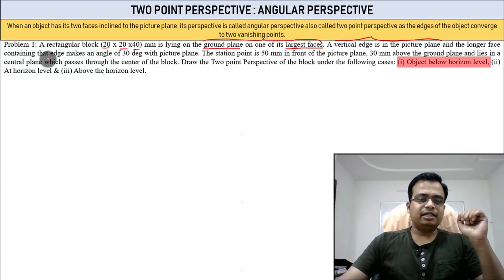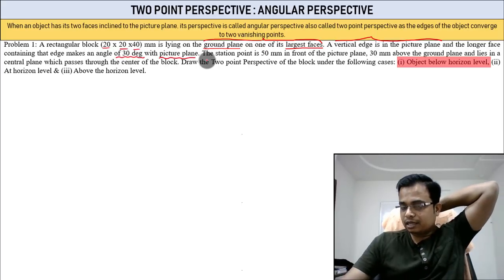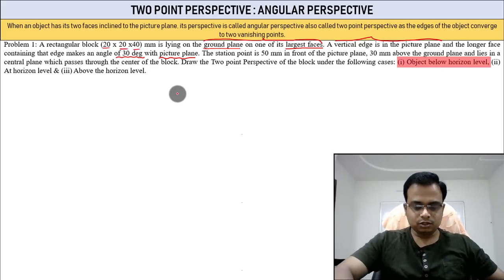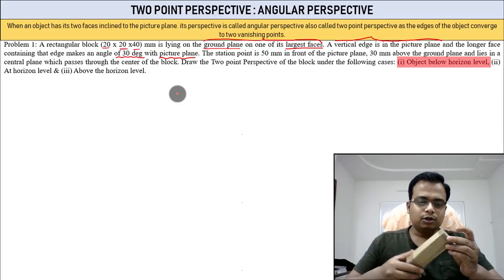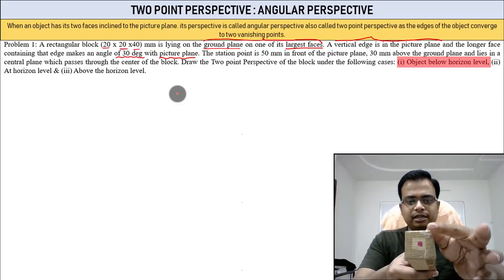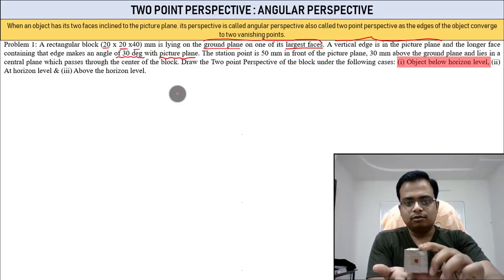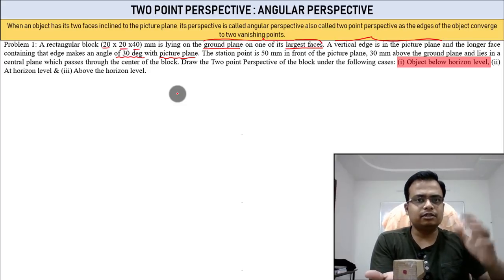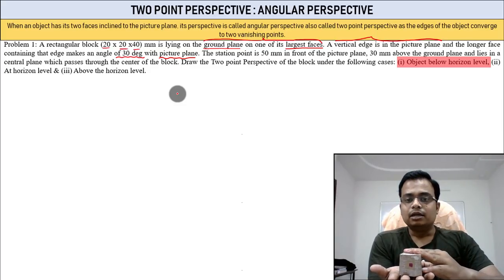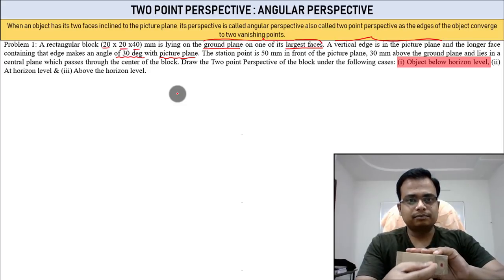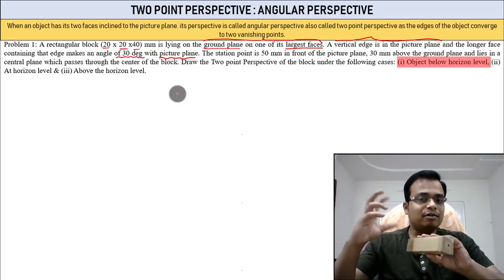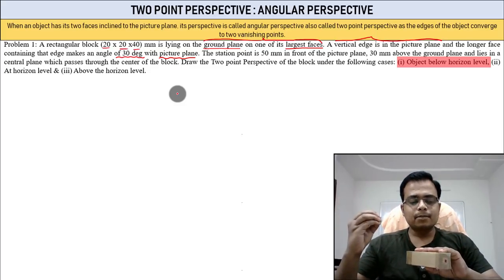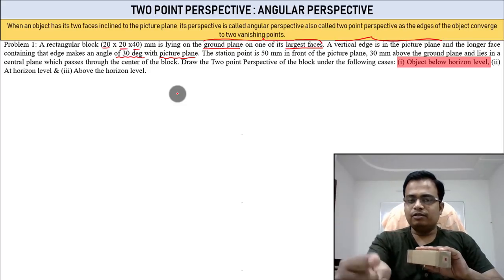The longer face containing that edge makes an angle of 30 degrees with the picture plane. So the situation is this: you have a rectangular block, 20 by 40 on its largest face in the ground. You guys are watching this from the front — you are the observer in this perspective projection environment.